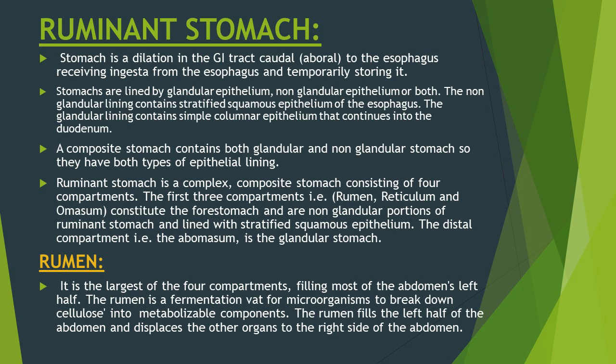Stomach is actually a dilation of gastrointestinal tract and it is present aboral to the esophagus. Its function is to receive the ingesta coming from the esophagus, temporarily store the ingesta, and also cause partial digestion of the ingesta. The walls of the stomach are lined by two types of epithelium — glandular epithelium or non-glandular epithelium. The lining of the stomach of canines is purely composed of glandular epithelium.